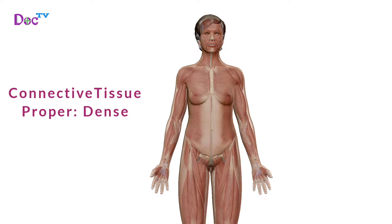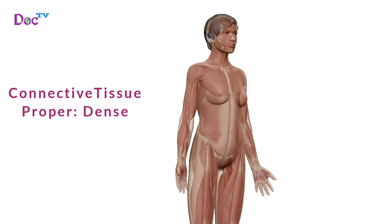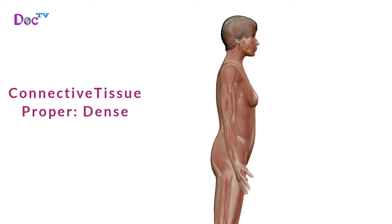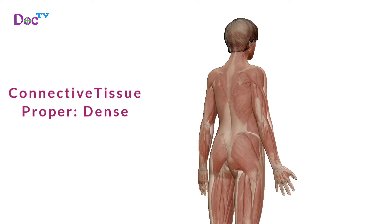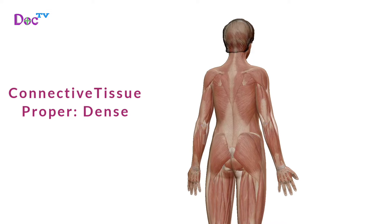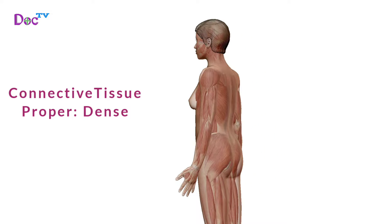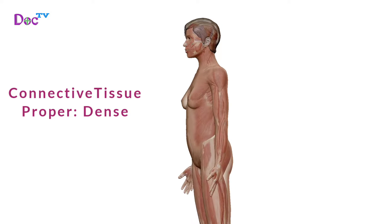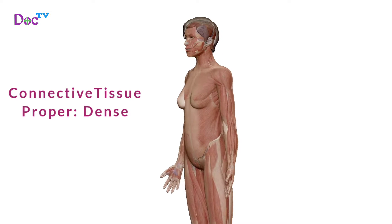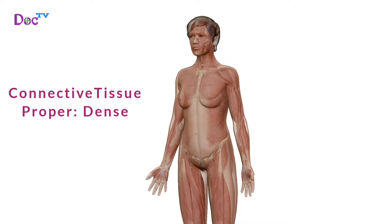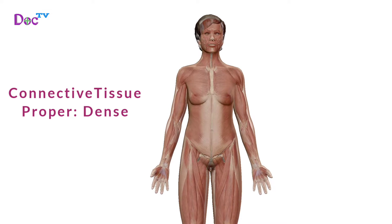In dense connective tissue, also known as fibrous connective tissue, it is characterized by tightly arranged fibers. This structure makes it flexible and resistant to tension. There are two types of dense connective tissue: dense regular and dense irregular.